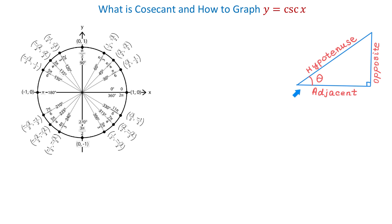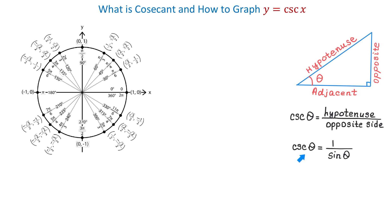In a right triangle, the cosecant of angle theta is the ratio of the hypotenuse to the opposite side. This is the abbreviation we use, and we say that cosecant of theta is the hypotenuse divided by the opposite side. The cosecant function is the reciprocal of the sine function, and we write that cosecant of theta is 1 over sine of theta. That is because sine of angle theta is the opposite side divided by hypotenuse, while the cosecant is the hypotenuse divided by the opposite side.